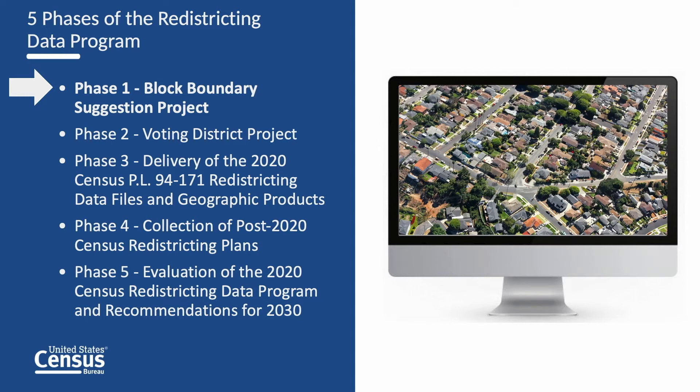Participation in phase one of the redistricting data program was conducted through the non-partisan liaison designated by each state. Phase one was conducted in two cycles: an initial identification of the updates needed, and a verification cycle to ensure the suggested updates were accurately applied.